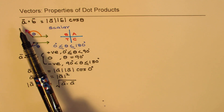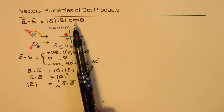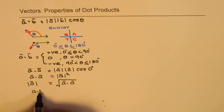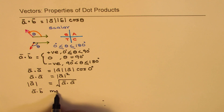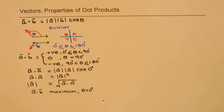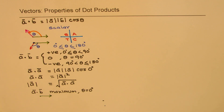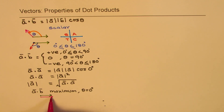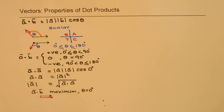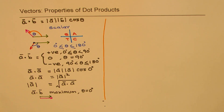Since cosine theta is maximum when theta is 0, to maximize the dot product, theta must equal 0 degrees. That means vector a and vector b are in the same direction — they are co-linear.